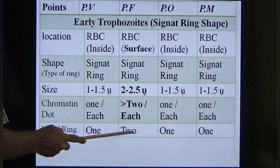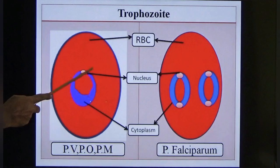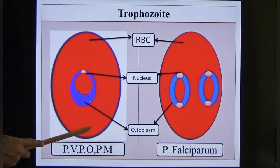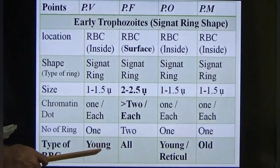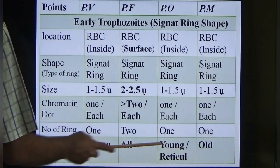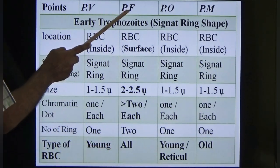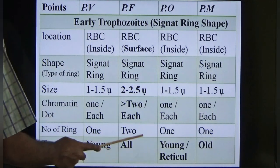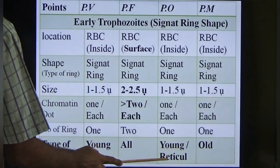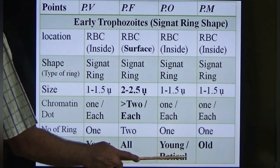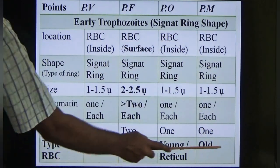Number of rings: 1 in vivax, ovale and malariae; but in falciparum it is 2 or more. Cytoplasm: in vivax, ovale and malariae it is asymmetrical and irregular (varying thickness). In falciparum it is symmetrical and regular. Regarding type of RBC affected: vivax affects young RBCs; falciparum affects all types of RBC; ovale affects young RBCs and reticulocytes; malariae affects old RBCs — this is important for MCQs.